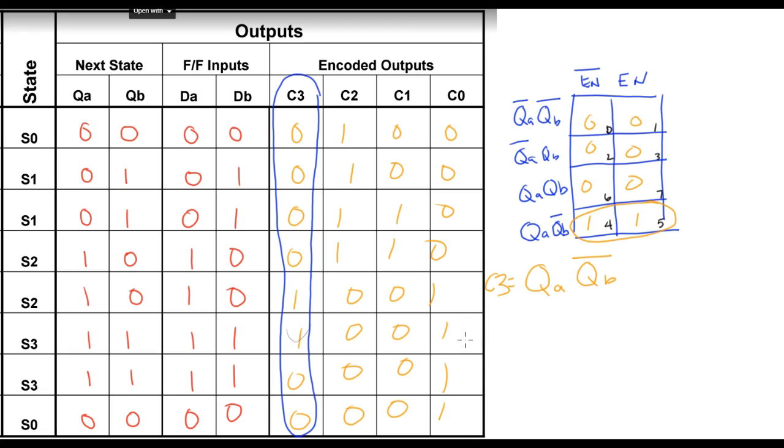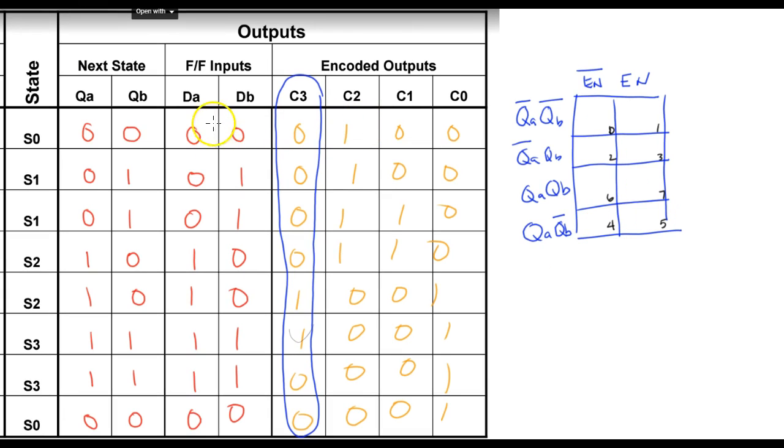We can do that for each of the columns. We need to do that for all of our encoded outputs, but remember we also have to do that for our flip-flop inputs, for our DA and DB. So I can show that one more time. I'm going to erase those previous values.